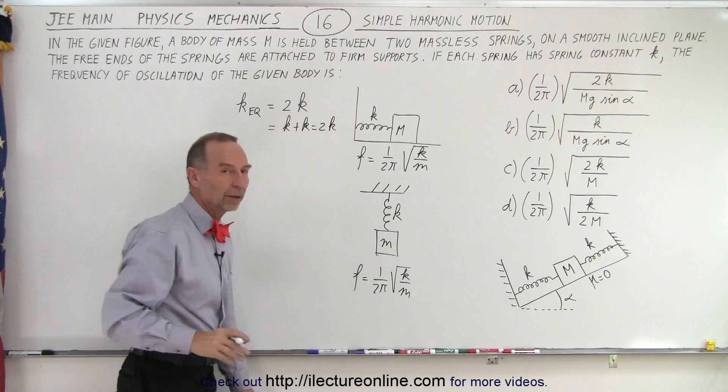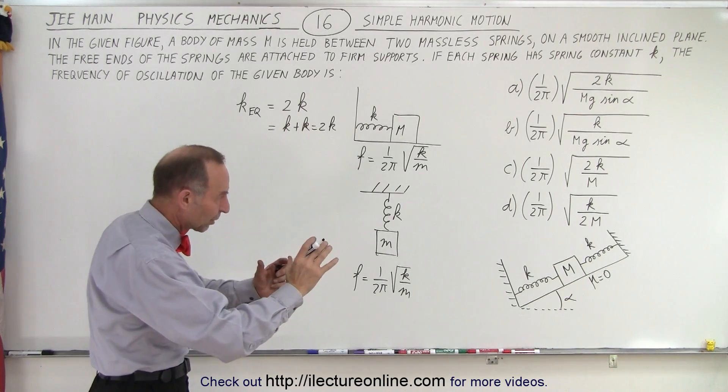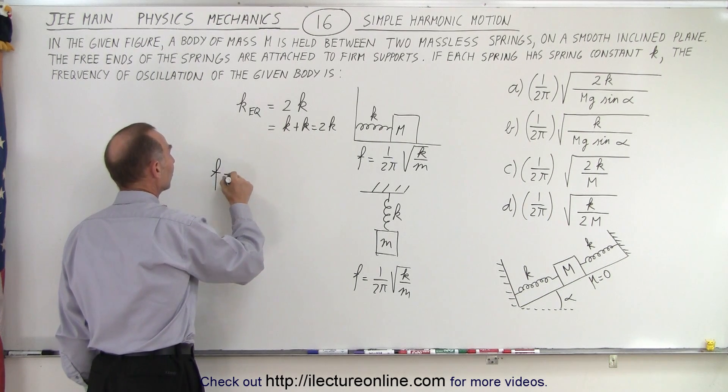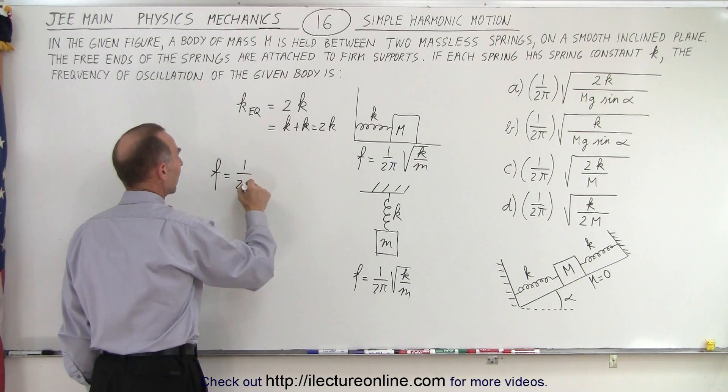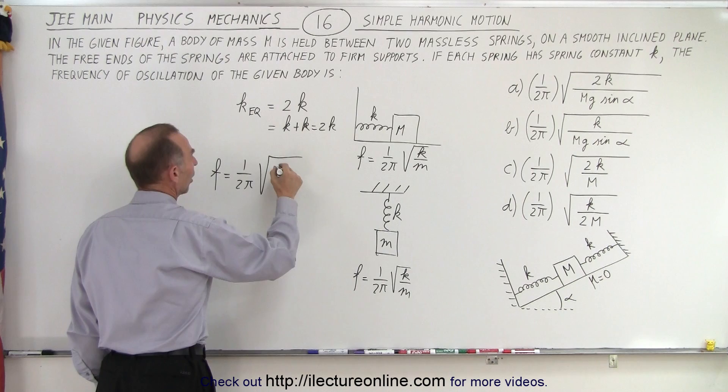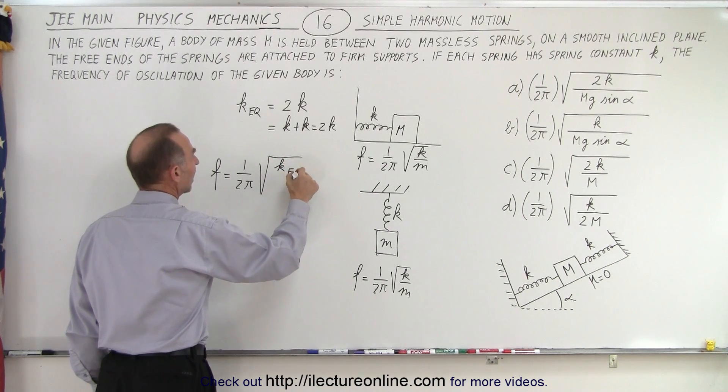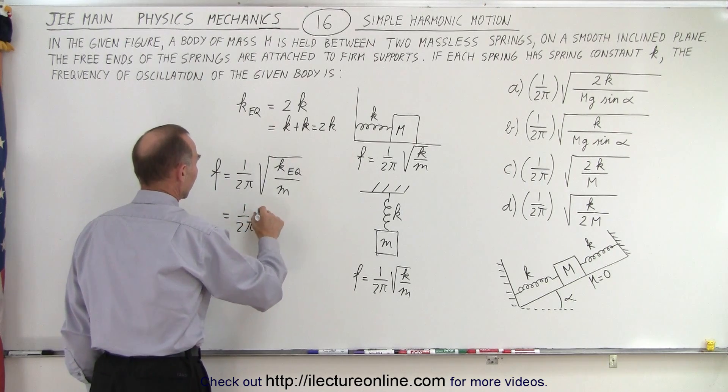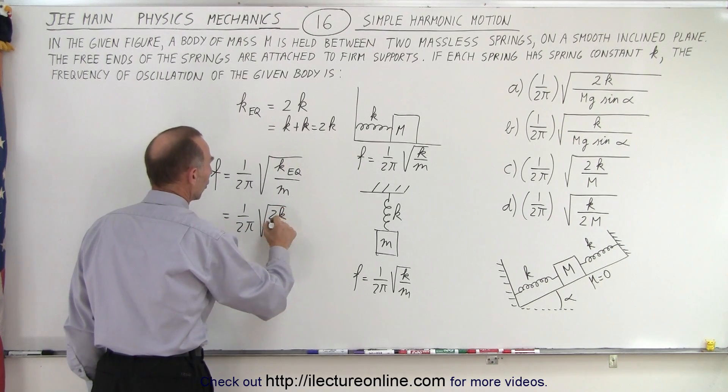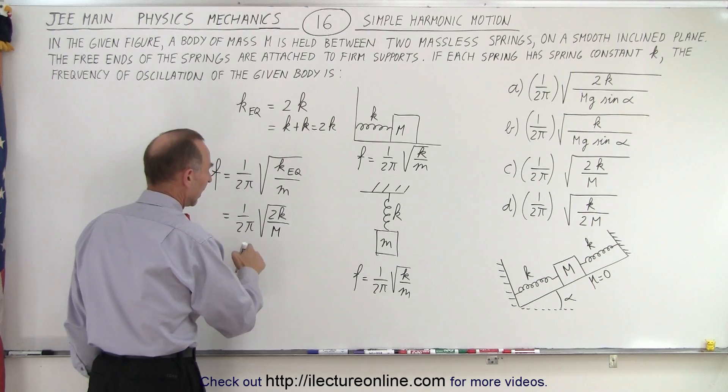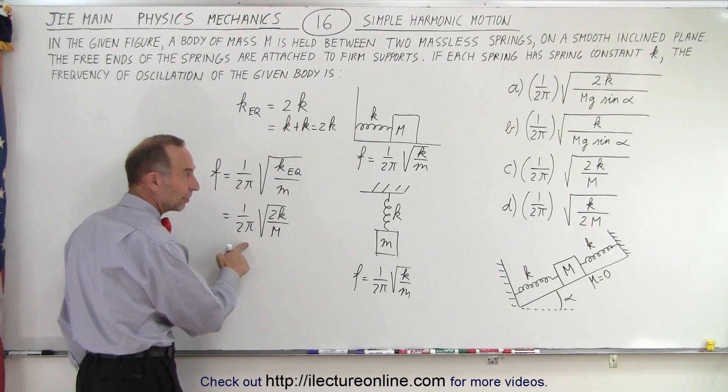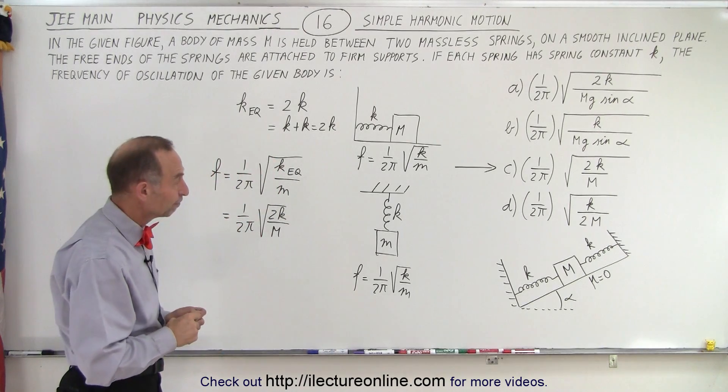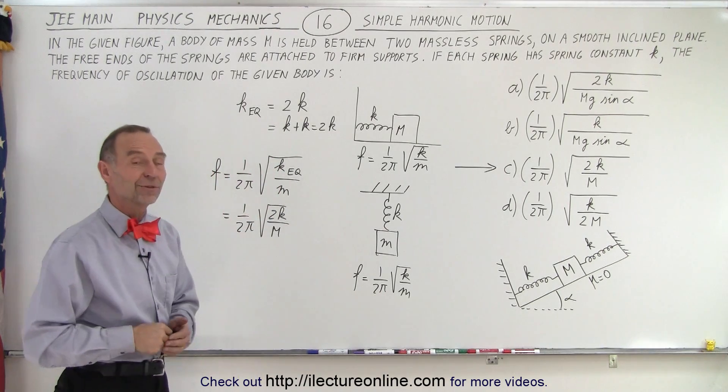And so then you realize that F must equal 1 over 2π times the square root of the equivalent K divided by the mass, and in this case, that's equal to 1 over 2π times the square root of 2K over the mass of the object M. And notice if you go looking for the right answer, it looks like C, in this case, will give you the right answer. And that is how it's done.